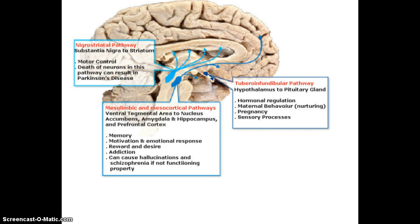This figure illustrates what we've just talked about. It shows the nigrostriatal pathway with motor control, the mesolimbic and mesocortical pathways, and also the tuberoinfundibular pathway — which you don't necessarily need to know for this class, but it again highlights the fact that dopamine projects throughout the brain and has a number of roles in the nervous system.